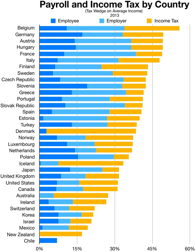Countries do not necessarily use the same system of taxation for individuals and corporations. For example, France uses a residential system for individuals but a territorial system for corporations, while Singapore does the opposite, and Brunei taxes corporate but not personal income.